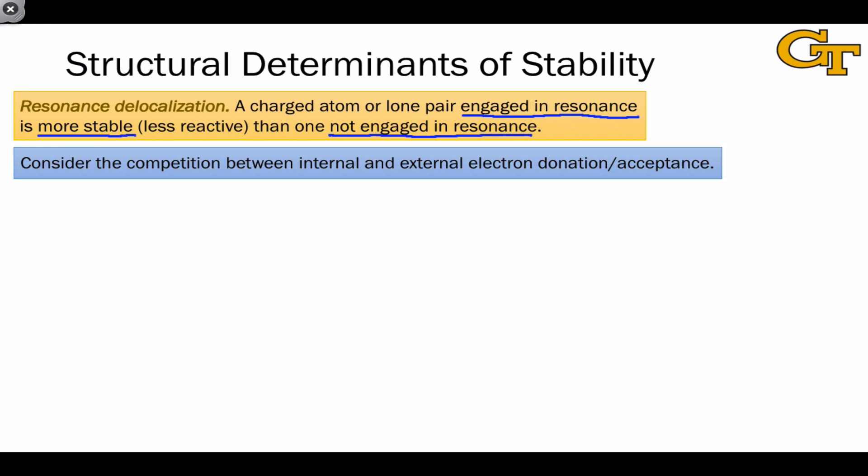One way to think about this is in terms of a competition between internal and external electron flow, where the possibility of internal electron flow, that is, an alternative resonance form, actually makes external electron flow less favorable and less likely.